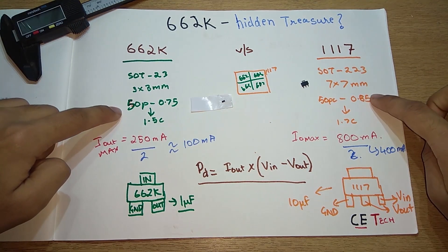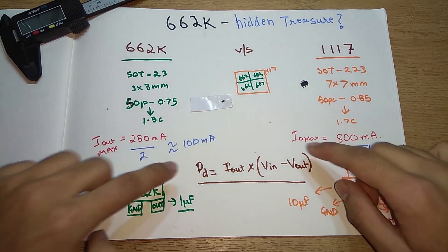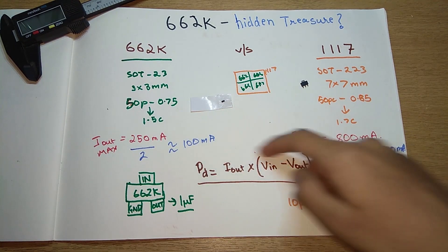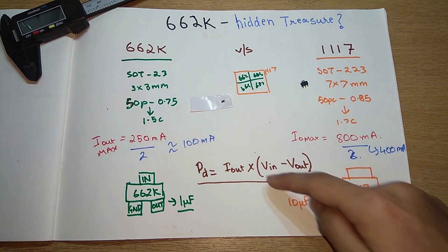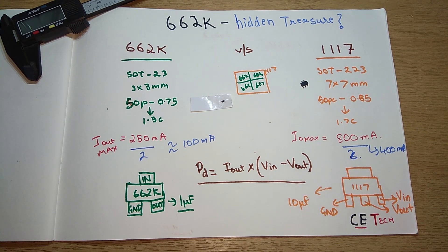Basically, we can see the size difference, the cost difference, the current difference. According to the current difference, you can calculate the power dissipation that will occur in your circuit because of the voltage difference. That's a basic overview of these two voltage regulators when compared face to face.